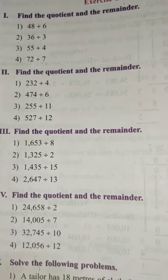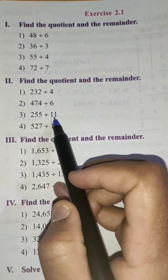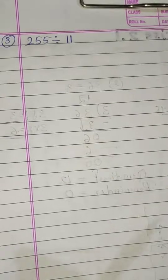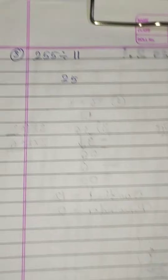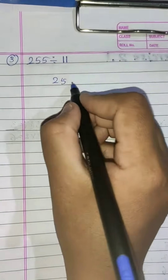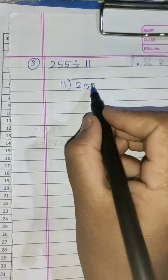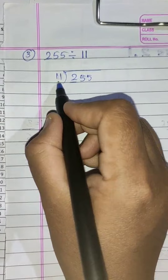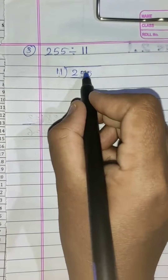Now we will take one more example — the third one. That is 255 divided by 11. So 255 divided by 11. Here the first digit 2 is smaller than 11, so you cannot divide 2 by 11. You have to take the next digit, making it 25.